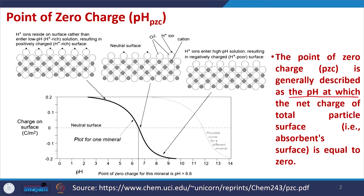What is point of zero charge? It is described as the pH at which the net charge of the total particle surface — whether an adsorbent particle or colloidal particle — is equal to zero. This is true for adsorbents and for colloids as well. pH is very important: below a certain pH particles may have positive charge, and above a certain pH they may have negative charge. We always try to find the pH at which the surface charge on the colloid is neutral.